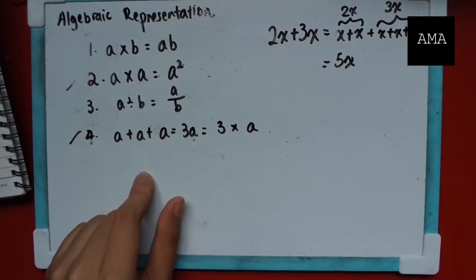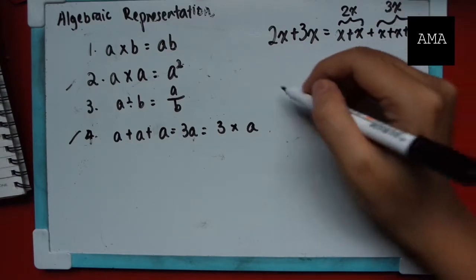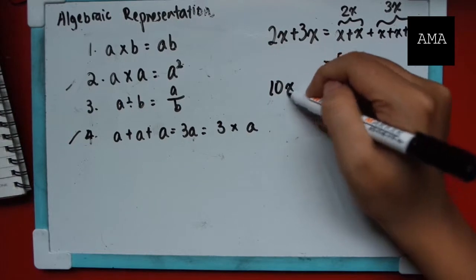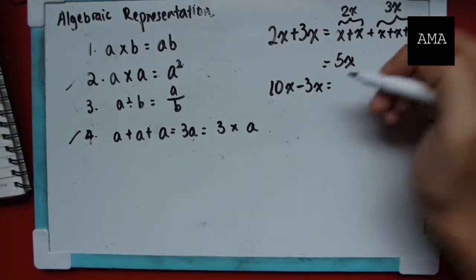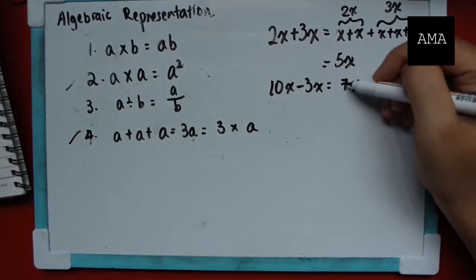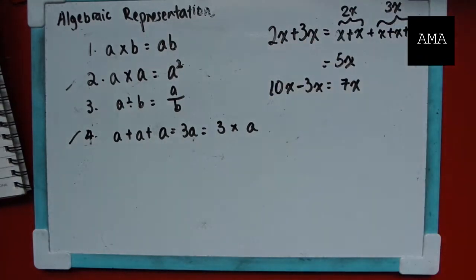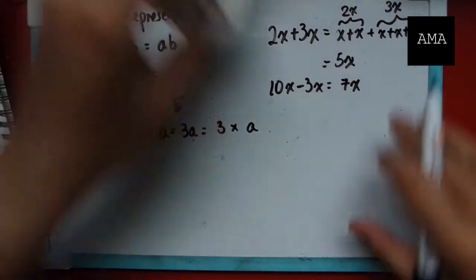So the same goes for subtraction. If I have 10x minus 3x, I would get 7x. It's the same thing. So let's say I have 10 apples and I lost 3 apples, I would have 7 apples left. Same logic.